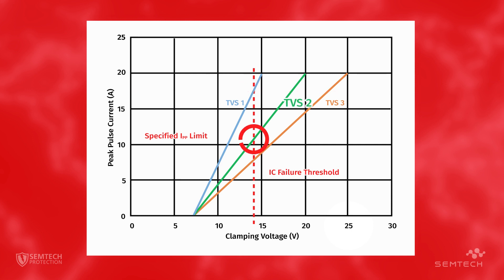TVS2 does not reach the 14 volt clamping until just under 11 amps. Theoretically, this device would protect the IC. However, there is very little design margin.